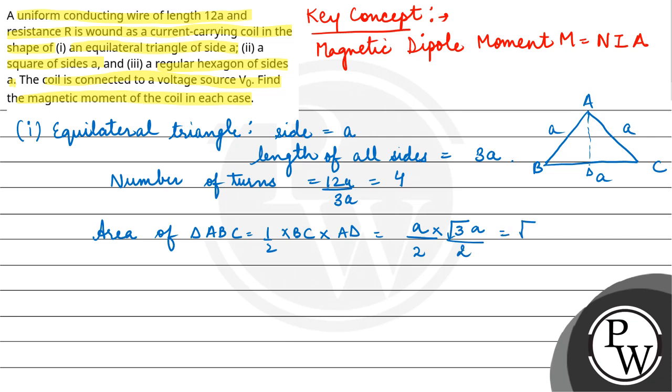and AD would be equal to root 3a by 2. This is equal to root 3 a square upon 4. We need to find magnetic dipole moment which is NIA. Number of turns 4, current I, and area root 3 a square upon 4. So this is equal to root 3 I a square.